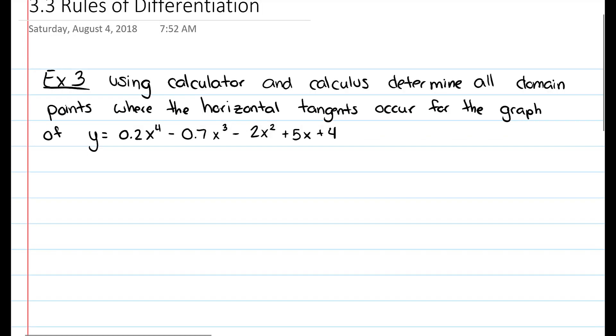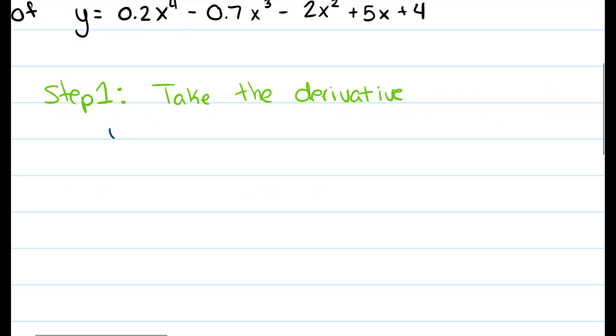Just like in the previous example, step 1 is going to be to take the derivative. So then we get that y prime is equal to 0.8x cubed minus 2.1x squared minus 4x plus 5. So that is the graph of the derivative.